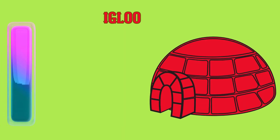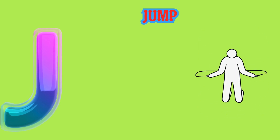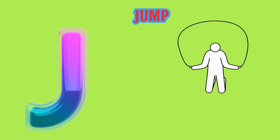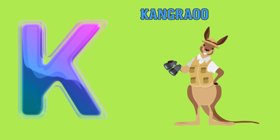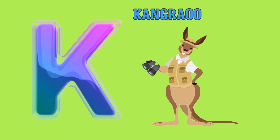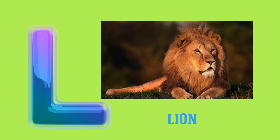I is for Igloo, I-I-Igloo. J is for Jump, J-J-Jump. K is for Kangaroo, K-K-Kangaroo. L is for Lion, L-L-Lion.